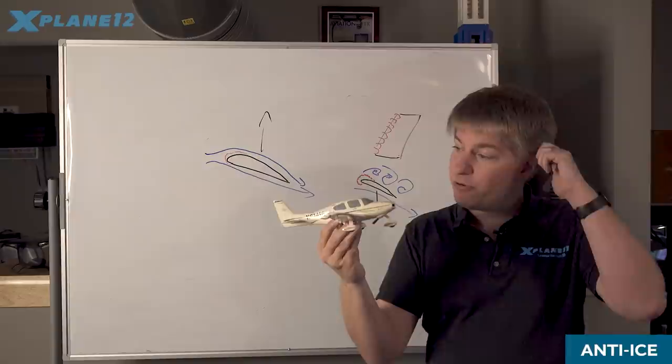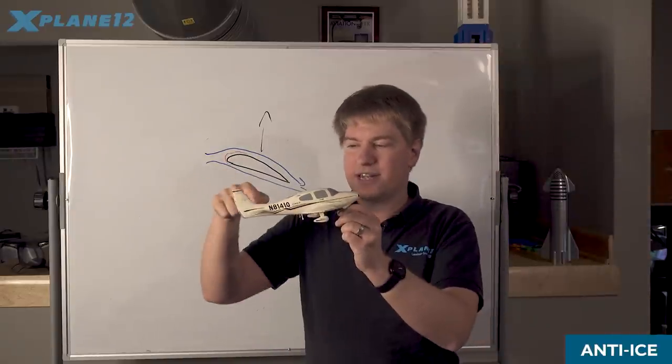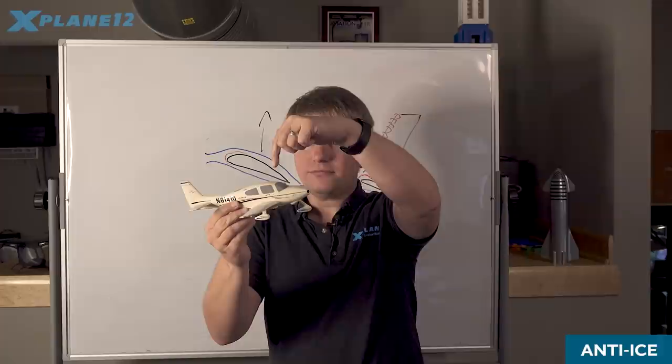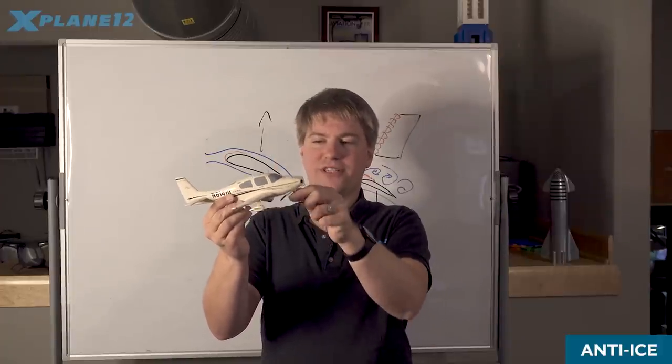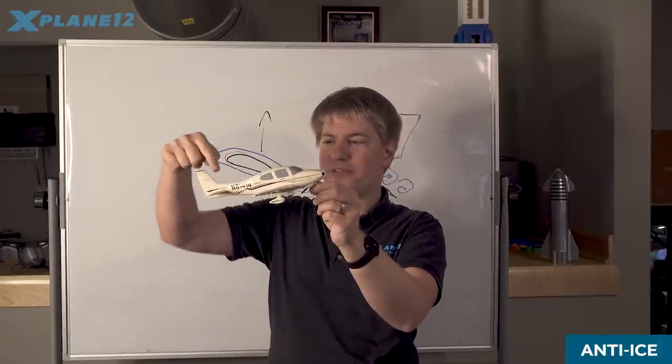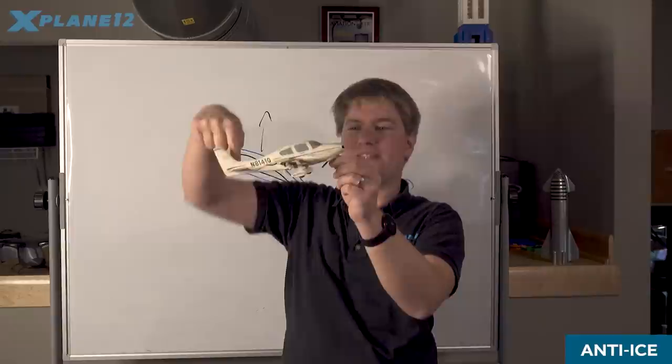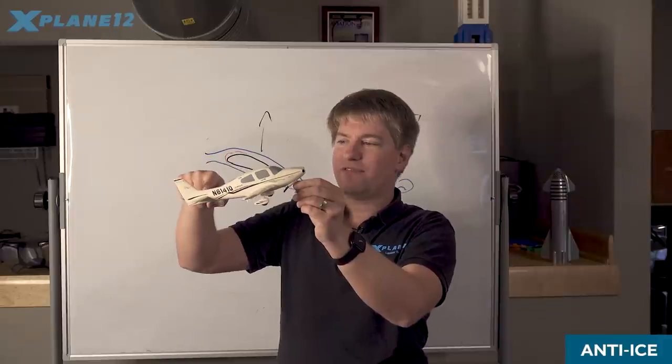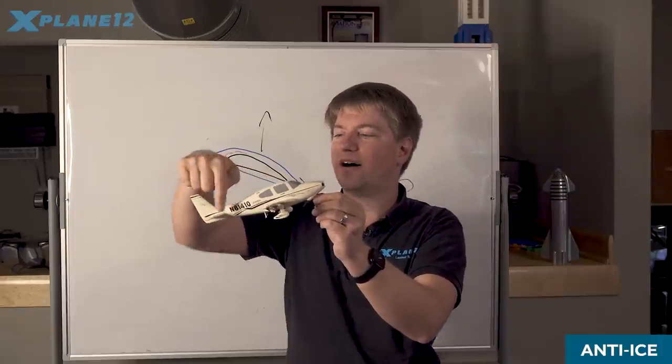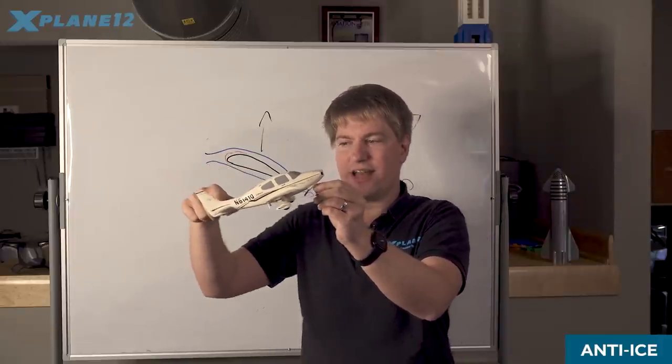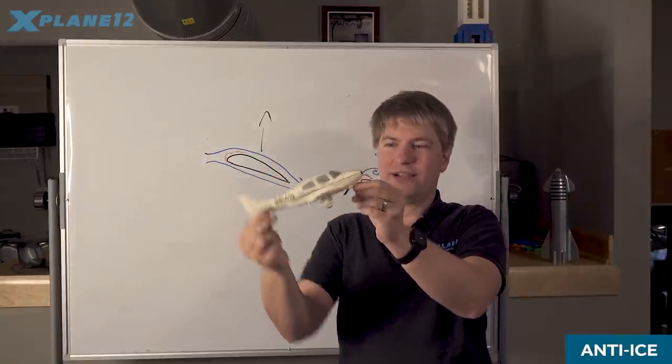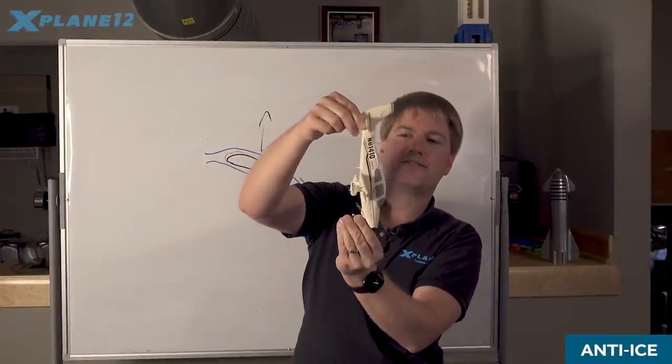The reason that this is important is that the stabilizer provides downforce in normal flight. Most of the weight of the aircraft is in front of the center of lift, so the stabilizer needs to provide downforce to counteract that moment. What happens if you accumulate too much ice on the stabilizer is that you can have a tail stall which results in that downforce going away and the airplane essentially trying to somersault.